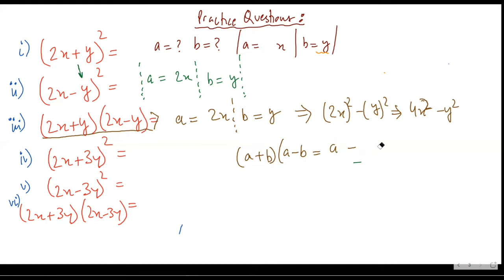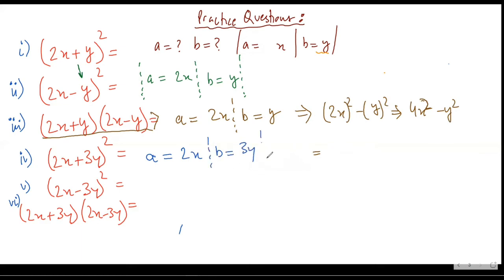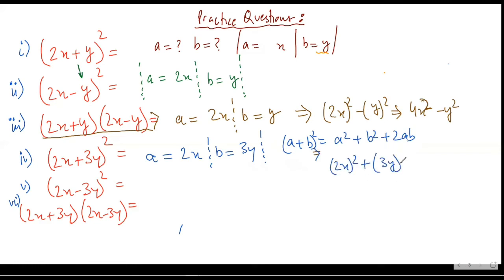Again and again, you have to write your a and b first, only then start the question. Otherwise you'll make a lot of mistakes. So a is 2x, b is 3y. I'll be applying the first identity: (a + b)² = a² + b² + 2ab. This would be equal to (2x)² + (3y)² + twice of 2x into 3y, which is 4x² + 9y² + 12xy.